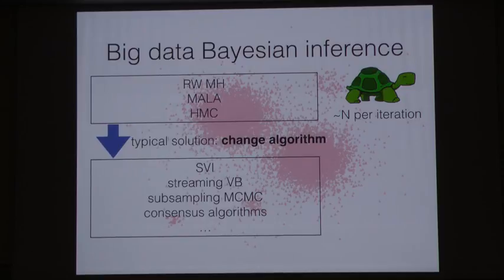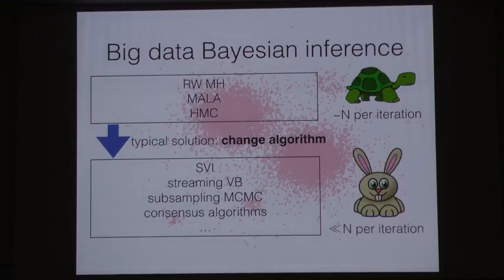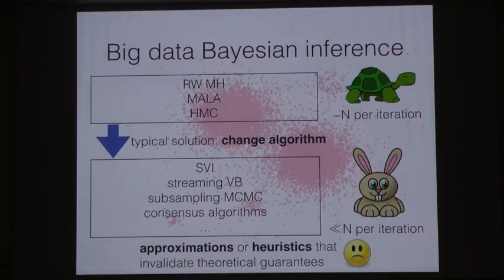We've got stochastic variational inference, streaming variational Bayes, subsampling MCMC methods, consensus algorithms. There's all sorts of great stuff out there. These are designed to cost much less than the amount of data that we have per iteration. SVI and subsampling MCMC, they just subsample a small amount of data at each iteration. Streaming VB only looks at each data point once. Consensus algorithms are able to work in parallel. But the price we typically pay for all these is that we introduce some sort of approximation or heuristic. And these usually eliminate the theoretical guarantees even asymptotically that we have with these more standard algorithms.